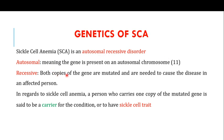The term recessive means that both copies of the gene are mutated, and both copies in mutated form are needed to cause the disease. We have two alleles for each gene — one from the father and one from the mother. A person who carries one mutated copy and one normal copy is known as a carrier or having sickle cell trait. Out of the two copies, one is mutated and the other is normal.